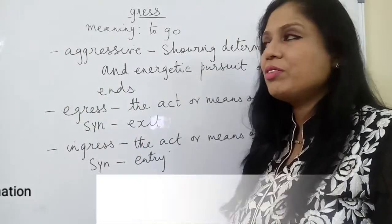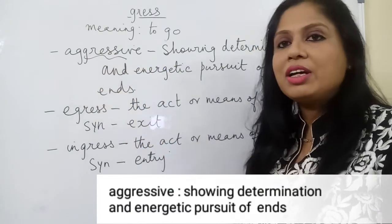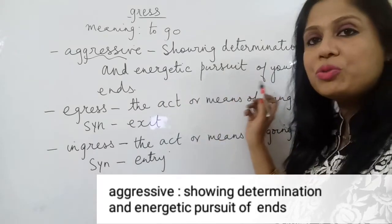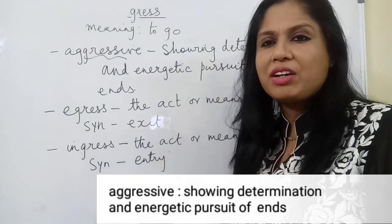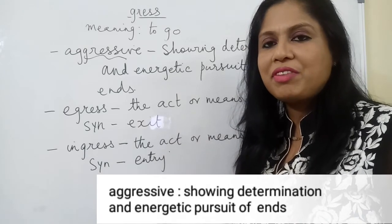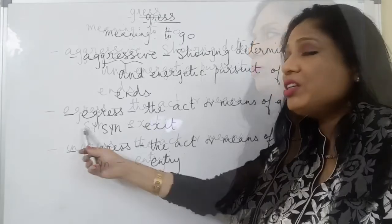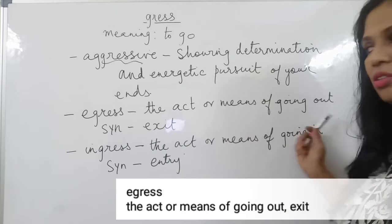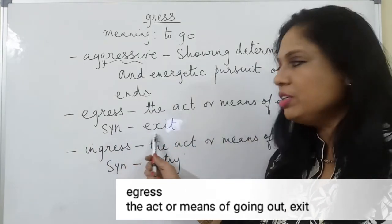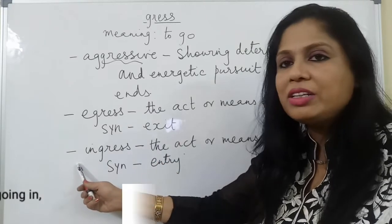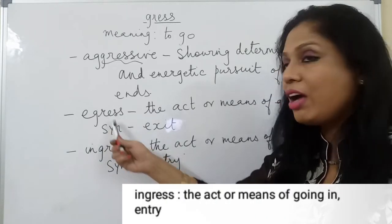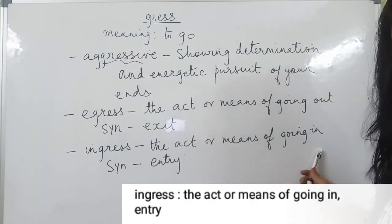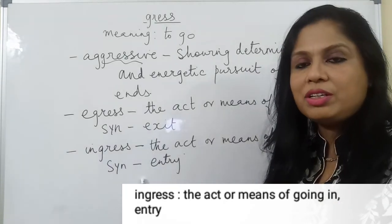The word 'aggressive' also contains this root word. It means showing determination and energetic pursuit of your ends — when there is a lot of energy reflected as aggression. The word 'egress' means the act or means of going out; its synonym is exit. The word 'ingress' is the antonym of egress — it means the act or means of going in, and its synonym is entry.